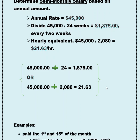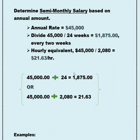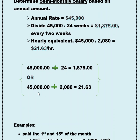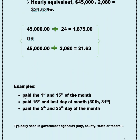So $45,000 divided by 24 pay periods gives you $1,875. Twice a month, you can expect a gross amount of $1,875. Your hourly equivalent is $21.63. Take your $45,000, divide it by 2,080, and that gives you $21.63. Examples of when this is paid: it might be the 1st and the 15th of the month, or the 15th and the last day of the month — which might be the 30th or 31st, depending on the month.